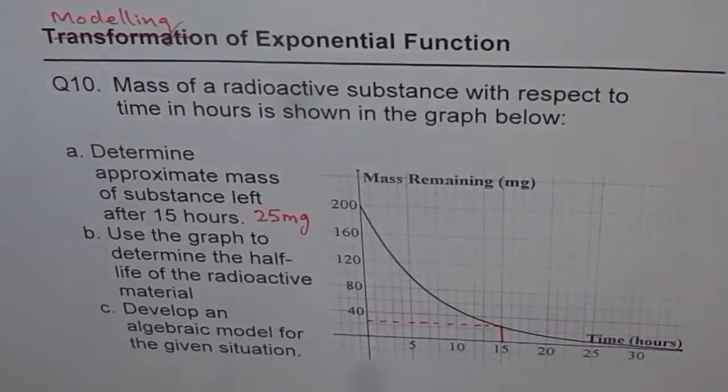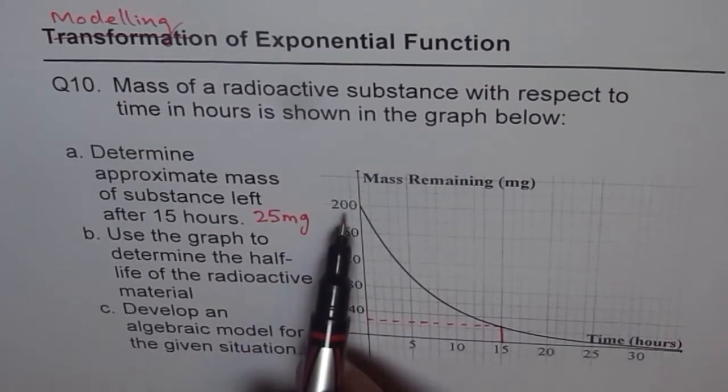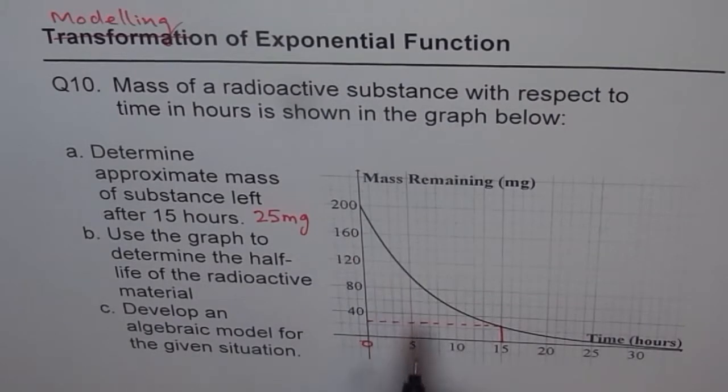Now part B is use the graph to determine half-life of the radioactive material. So the initial amount is 200, that is when t equals 0. So half of 200 is 100.